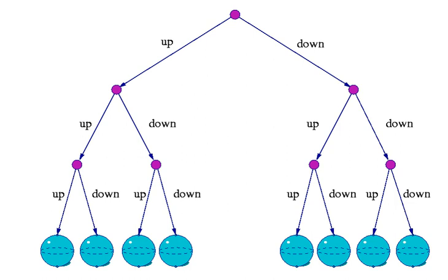Everett stated that for a composite system, for example a subject, or measuring apparatus observing an object system, such as a particle, the statement that either the observer or the observed has a well-defined state is meaningless. In modern parlance, the observer and the observed have become entangled. We can only specify the state of one relative to the other. The state of the observer and the observed are correlated after the observation is made.